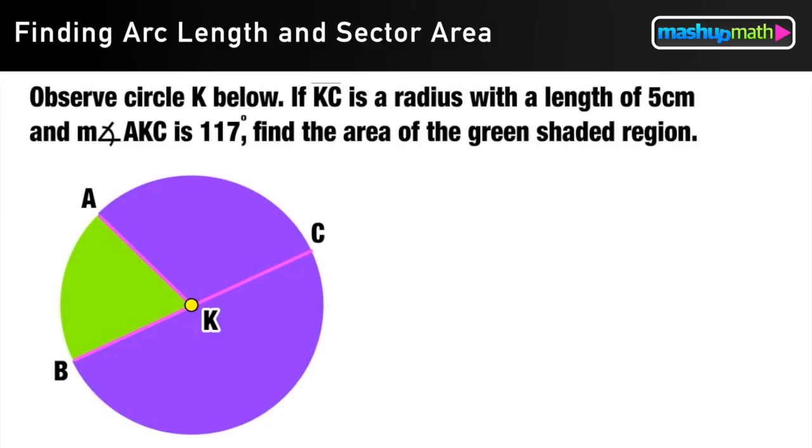So for our next example, we have circle K shown below. We know that line KC is a radius, whose length is 5 centimeters long. We also know that angle AKC is 117 degrees.